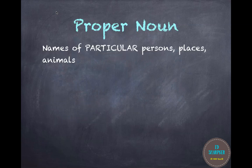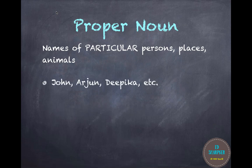A proper noun — these are the names of particular persons, places, or animals. For example, if it is a person, they have a particular name like John, Arjun, Deepika, etc.